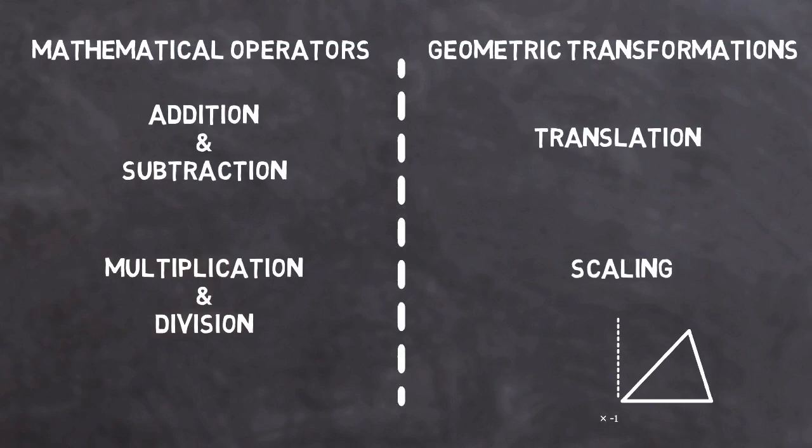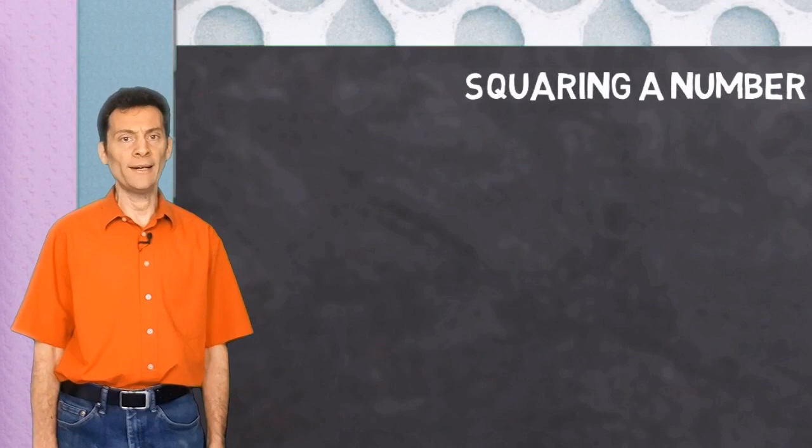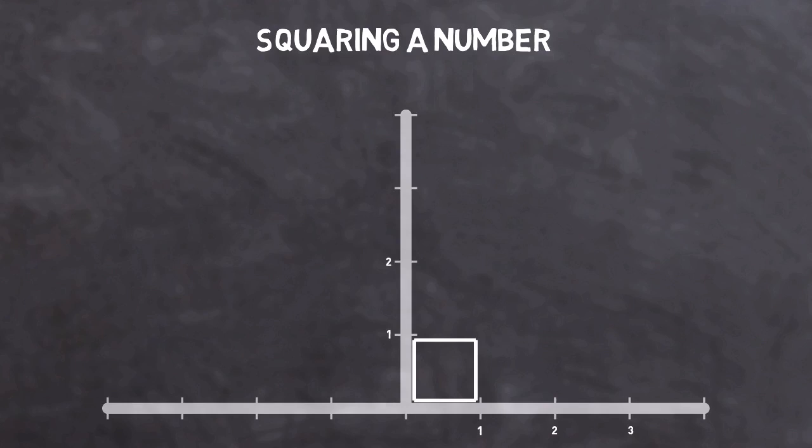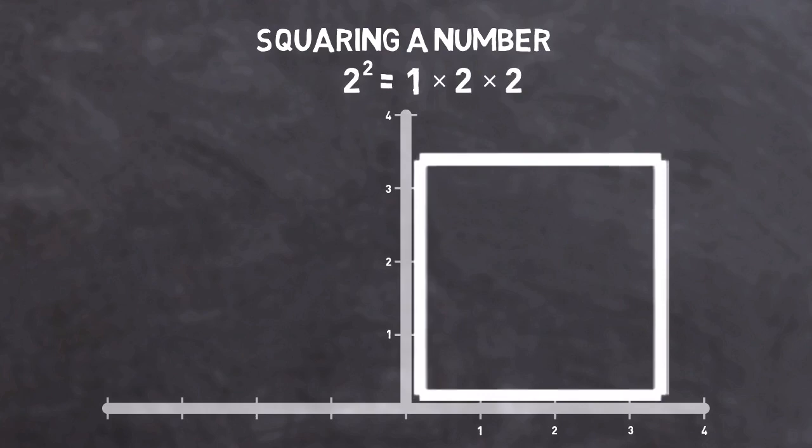What about squaring a number? Whenever we square a number, we could think of it as starting out with the unit square - that's a square whose length and height are both one - and applying the same multiplication twice to that unit. So if I wanted to represent two squared, I scale the unit square by two, and then by two again.